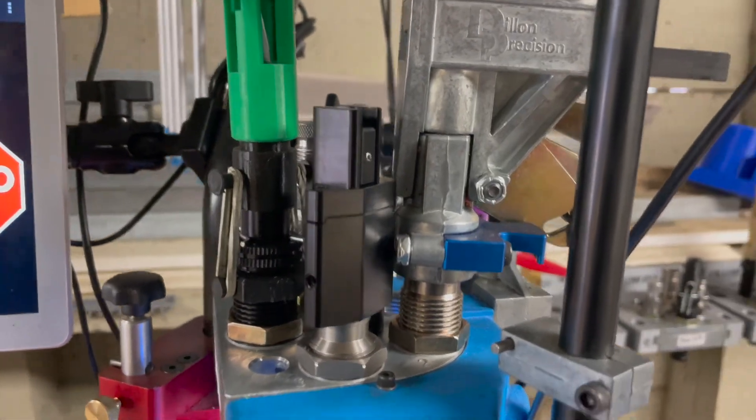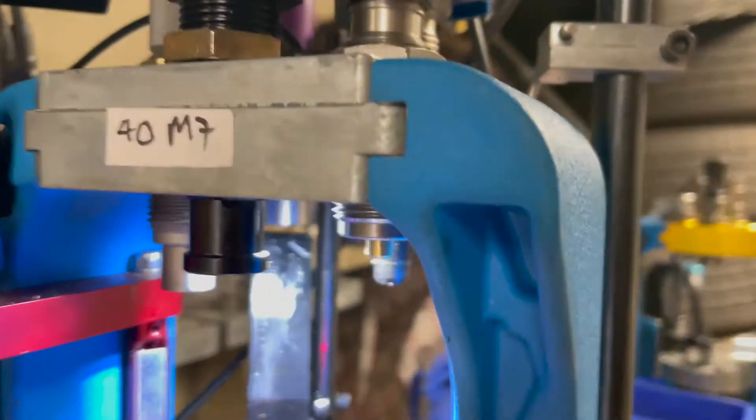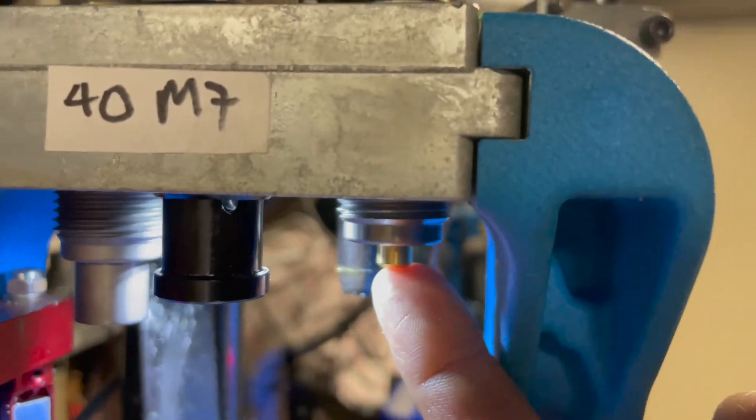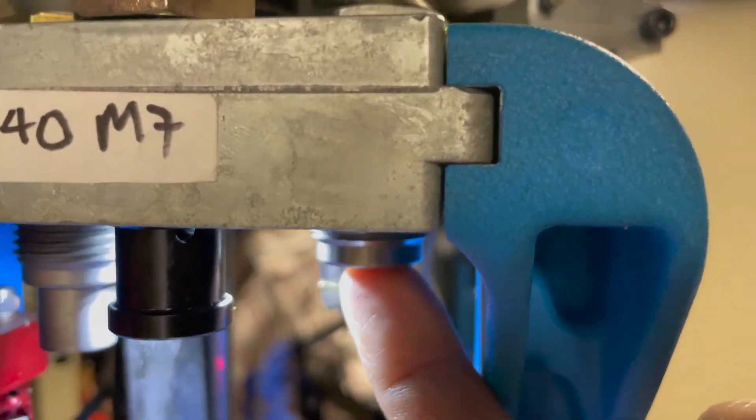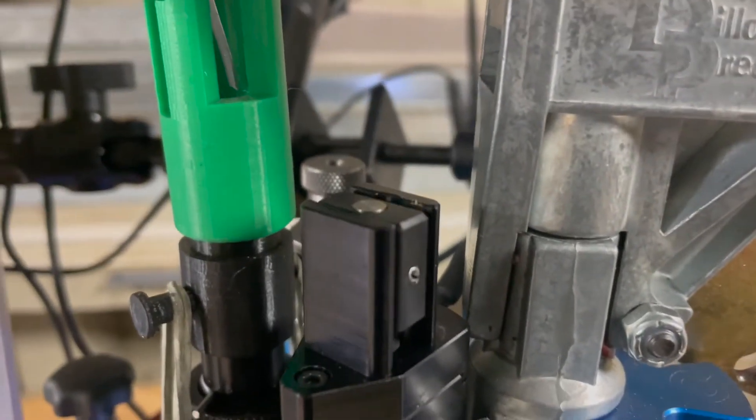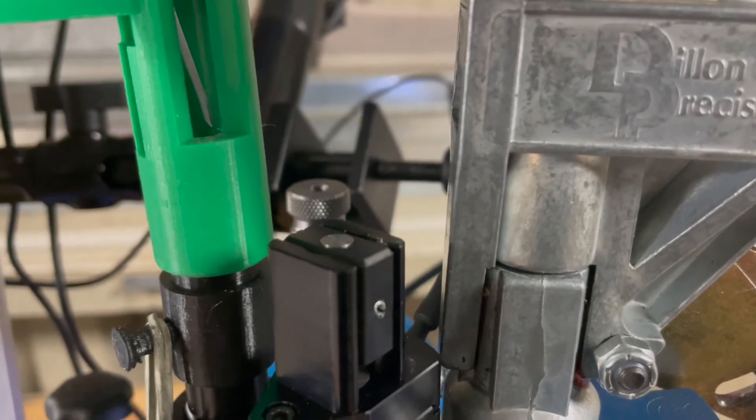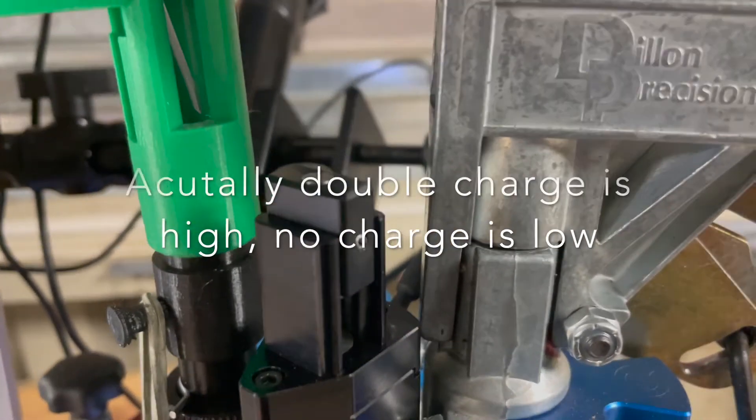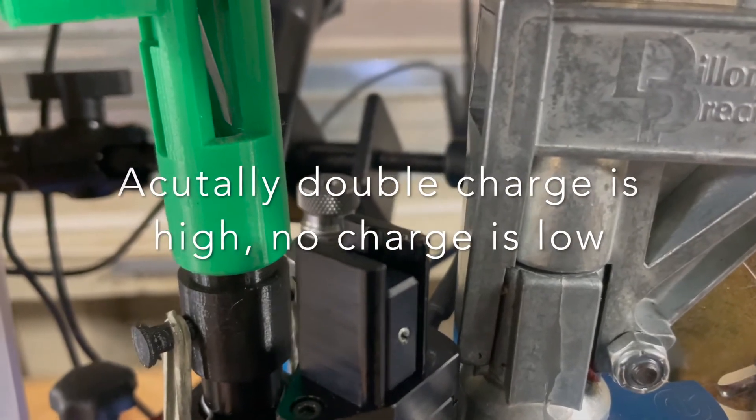So here's how this die works. You've got the measurement rod here, and when the case, depending on powder level, when this is flush with the top then it's okay. When you have a double charge or when you have no charge, it will go up higher, and a double charge will be lower.